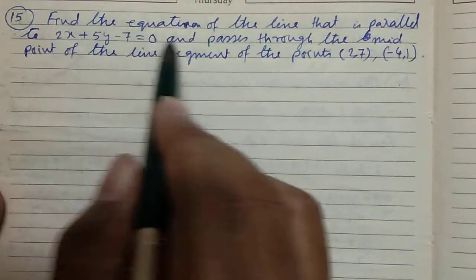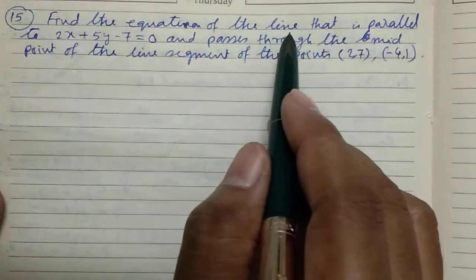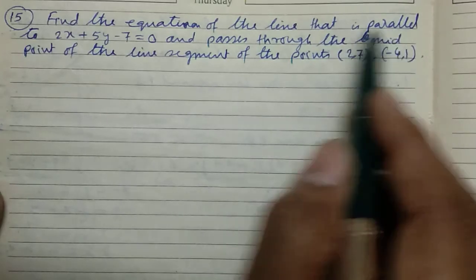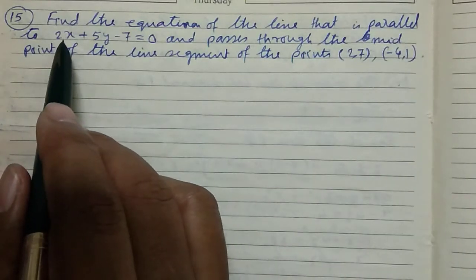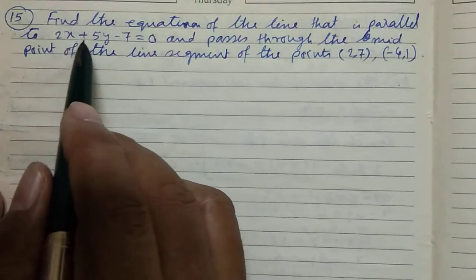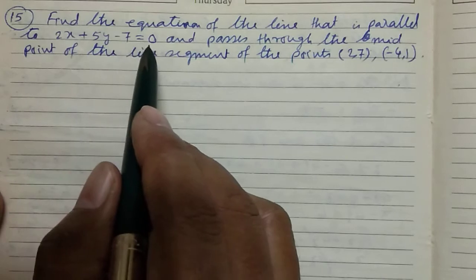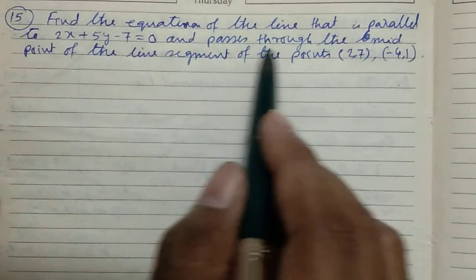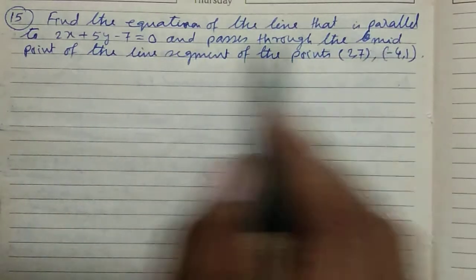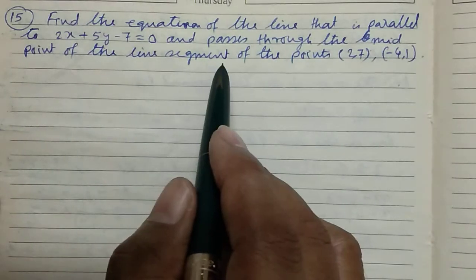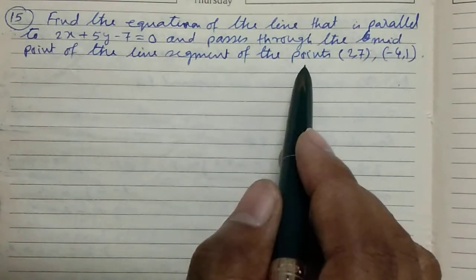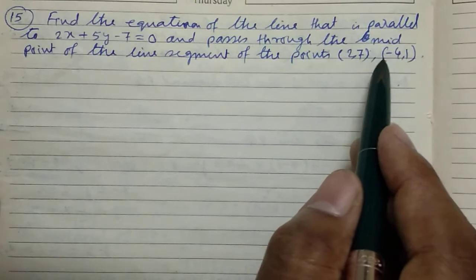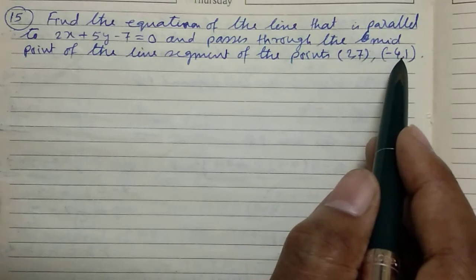Find the equation of the line that is parallel to 2x plus 5y minus 7 equal to 0 and passes through the midpoint of the line segment joining the points (2,7) and (-4,1).